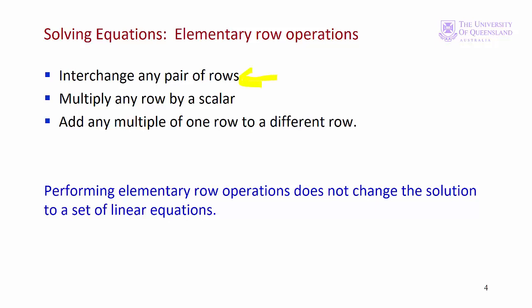Just changing the order of the equations won't change the solution. We can multiply an equation by a scalar — we've already come across this in solving single equations. The third operation might be less familiar, but once again we've already come across it in the simple case of solving by elimination. This rule tells us we can add any multiple of one equation to a different equation. We use combinations of these operations to solve the equations.